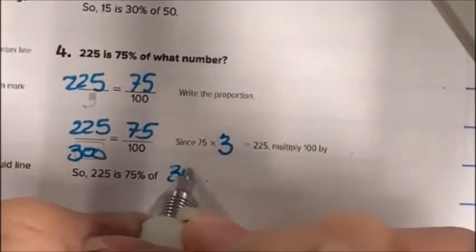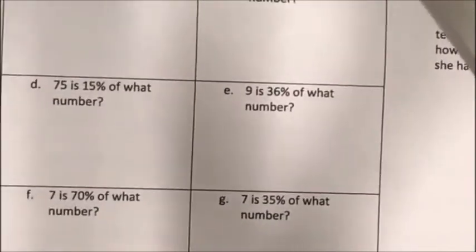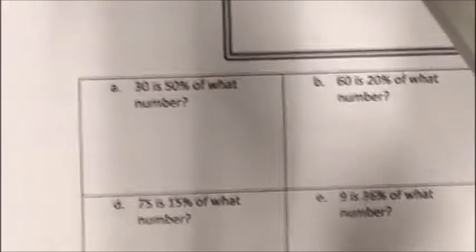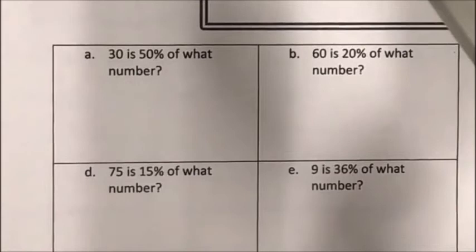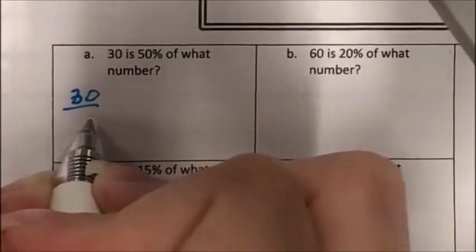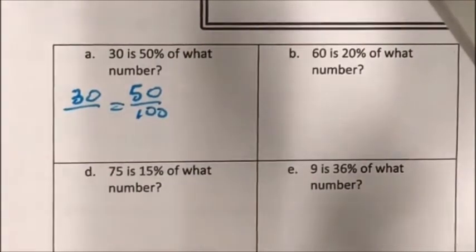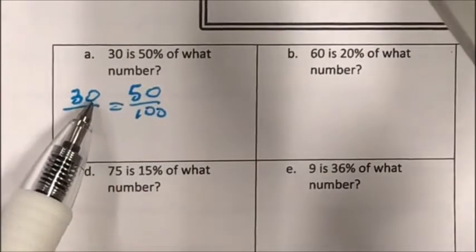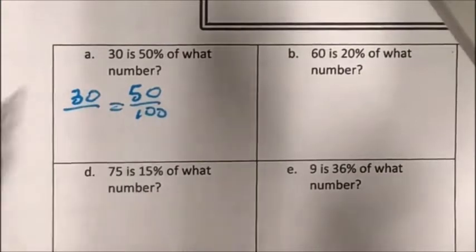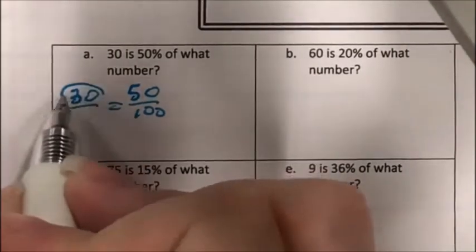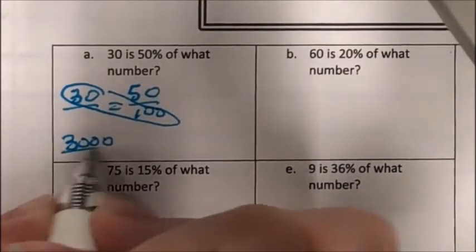On page 41 there are try-it problems. Pause the video and try them on your own, then come back and we'll work through them together. Problem A: 30 is 50% of what number. So 30 over blank equals 50 over 100. I can multiply 100 times 30 to get 3,000, then divide by 50, which equals 60. So the answer is 60.